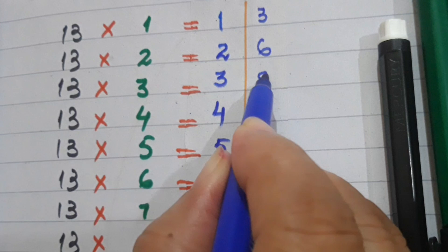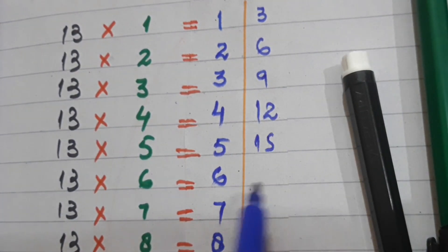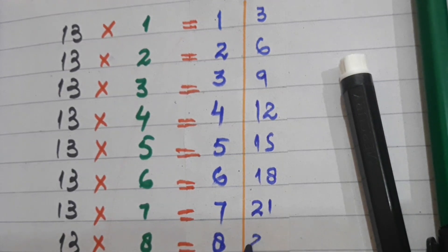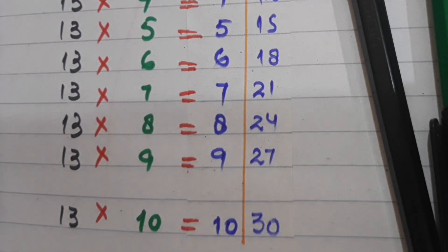So 3 times 1 is 3, 3 times 2 is 6, 3 times 3 is 9, 3 times 4 is 12, 3 times 5 is 15, 3 times 6 is 18, 3 times 7 is 21, 3 times 8 is 24, 3 times 9 is 27, 3 times 10 is 30.